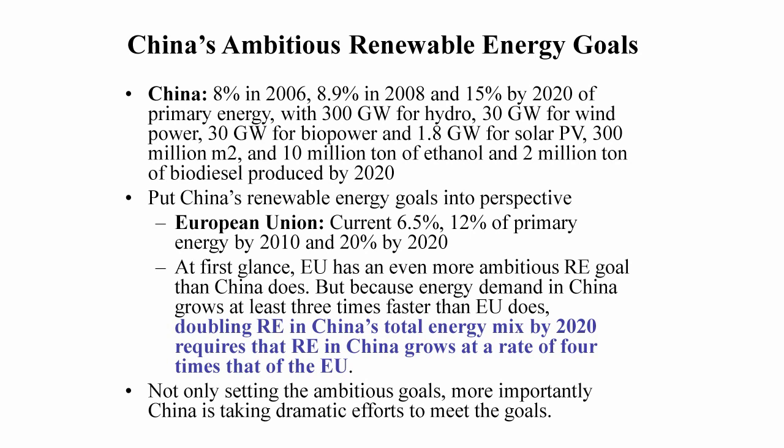Now let's discuss what the country has been doing on the renewable energy side. The country has set a very ambitious goal to increase the share of renewable energy in total energy consumption from 8% in 2006 to 15% by the year 2020. When we talk about renewable energy, people always refer to the EU as the leader. Comparing China with the EU, both will roughly double their shares, but because China's energy use grows three times faster than the EU's, renewable energy in China has to grow four times more. In that sense, China's target is much more ambitious than what the EU is doing.